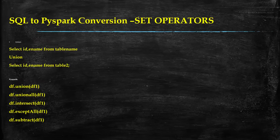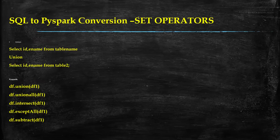Next, we look at set operators in SQL. The set operators available in traditional SQL — and also in HiveSQL — are UNION, UNION ALL, INTERSECT, and MINUS. Whenever you perform set operations, three rules must be followed: the number of columns should be the same, the data types should match, and the column positions should also be the same. If those three conditions are met, you can perform set operators.